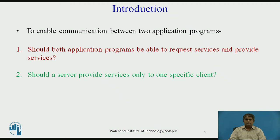At first glance it looks simple to enable communication between two application programs — one running at the local site and the other at the remote site. But many questions arise when we want to implement such an approach. Should both application programs be able to request and provide services, or should each program do only one or the other?